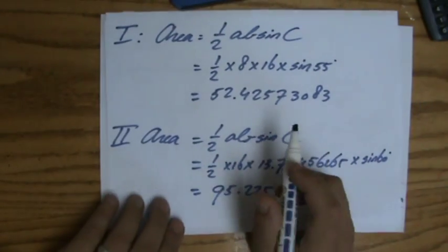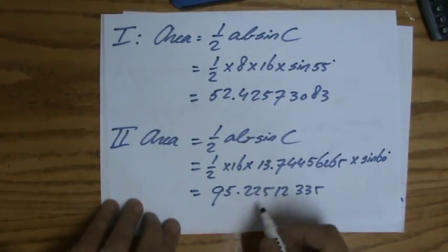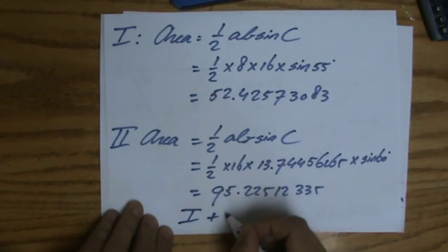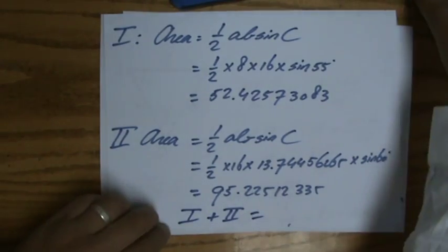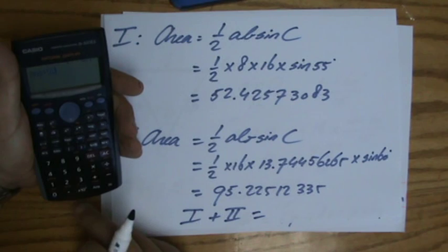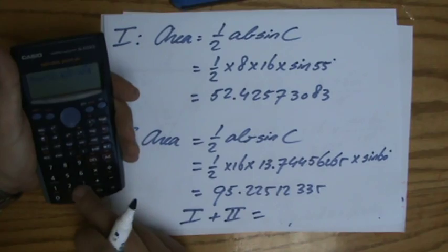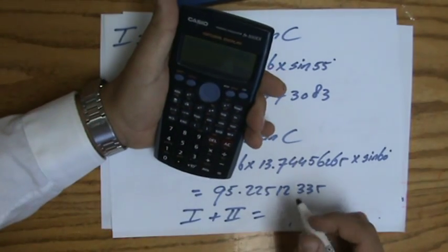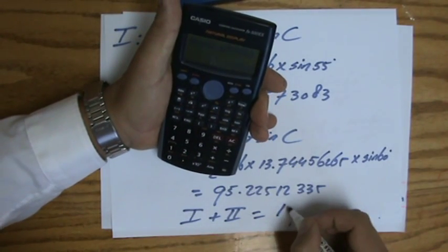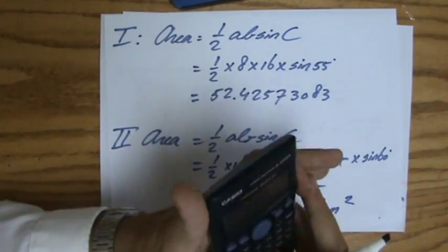Now, they wanted to find the area of the total park, I'm not finished yet, because what is the total area, well, that's going to be the area of 1 and 2 combined, so 1 plus 2, so 95 in all those decimals, plus 52.42573083, equals, I'm going to round it to 3 significant figures, straight away, 148 kilometers squared.